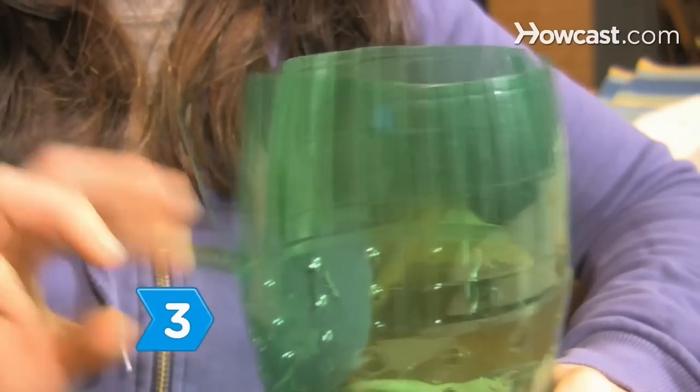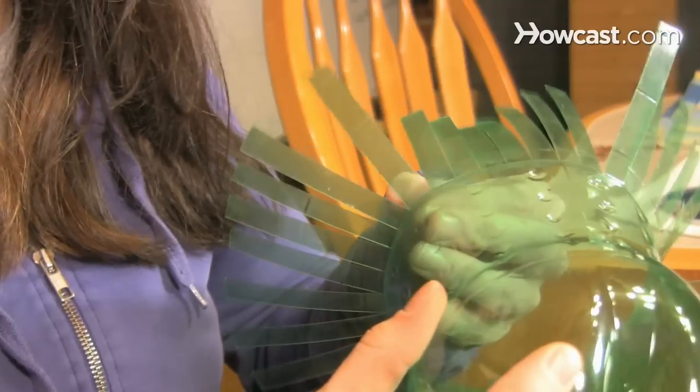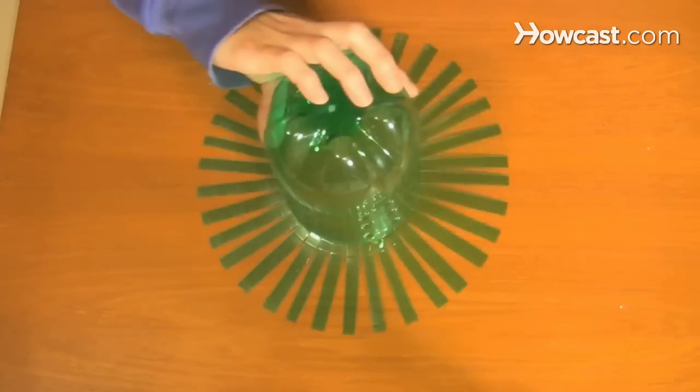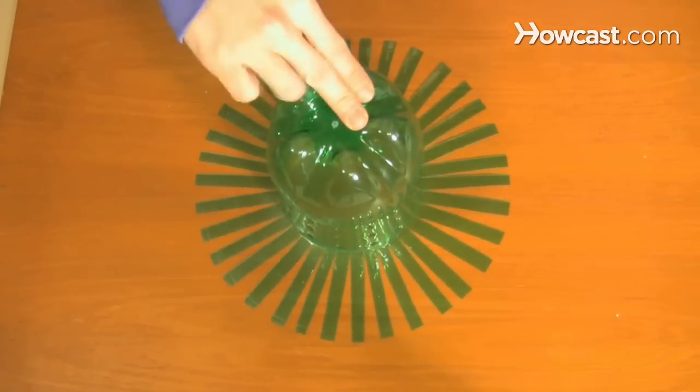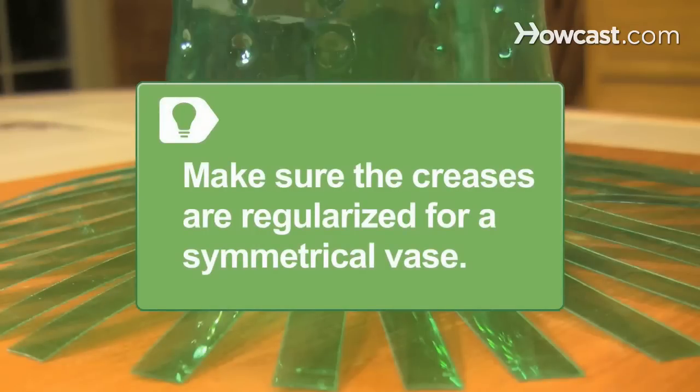Step 3. Carefully bend the strips outward, making a level edge around the top of the bottle. Turn the bottle upside down and press it against a flat surface to make sure the rim is even. Make sure the creases are regularized for a symmetrical base.